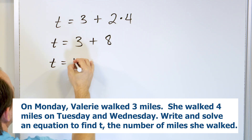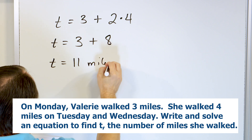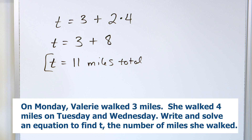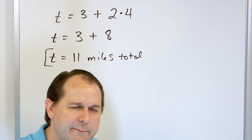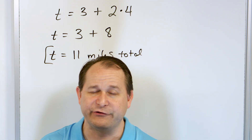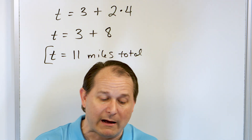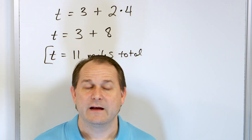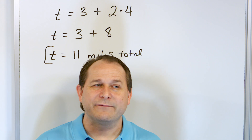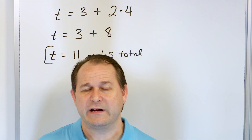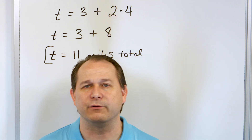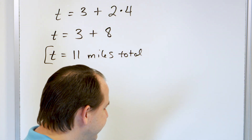Following order of operations, two times four is eight, and then eight plus three is 11 miles total. Again, do you really need an equation to solve this? No — you could probably figure this out by just reading the problem and multiplying and adding. But the point is very soon we'll have equations or problems that are really difficult to solve without writing an equation. Sometimes in physics and chemistry you have to write more than one equation, and it's just impossible without them. So we're building our skills here.